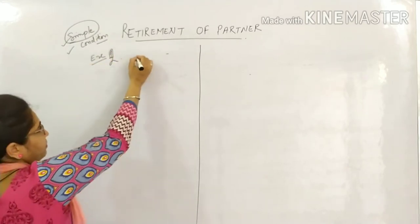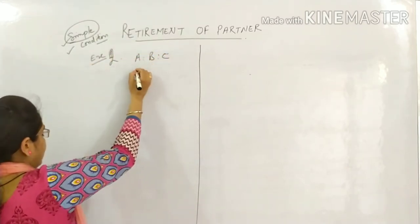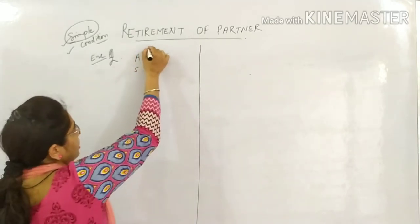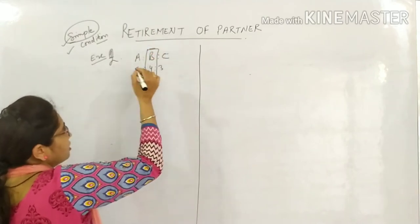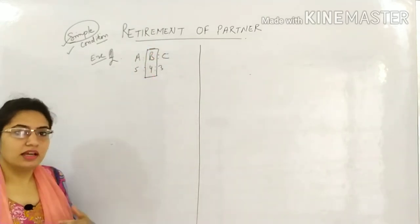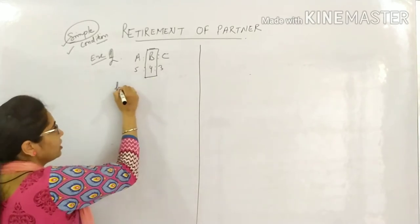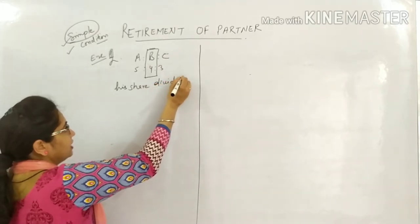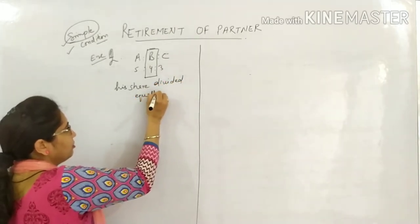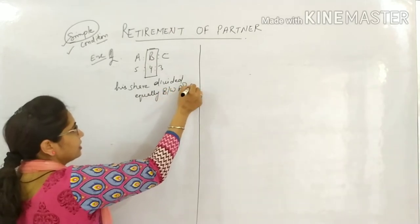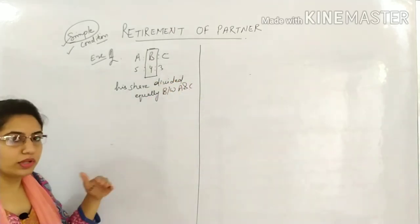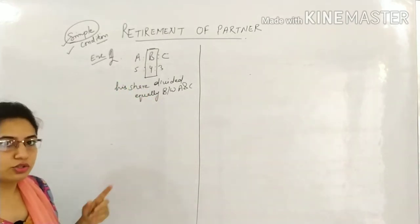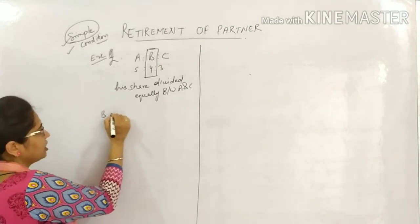Example number 2: A, B, C are partners with profit sharing ratio 5:4:3. B retires from the firm for some reason, and his share is divided equally between A and C. First, you need to know how much share B had, which will now be distributed between both. B's actual share is 4/12.